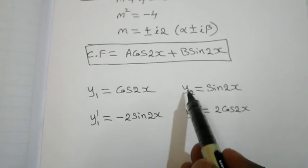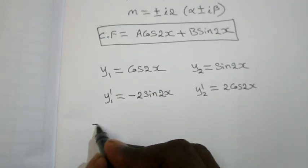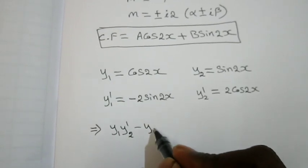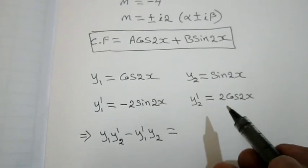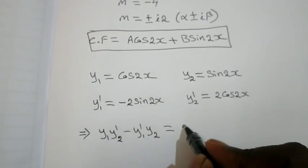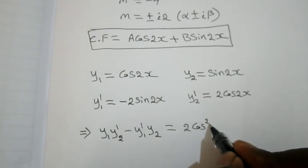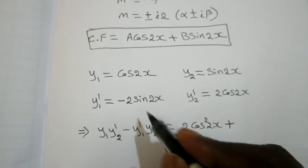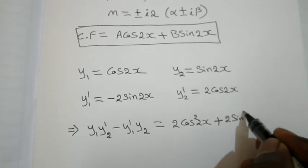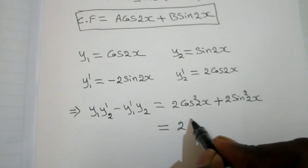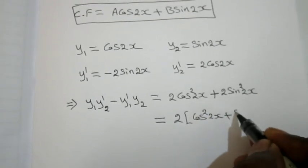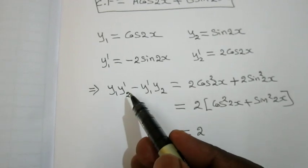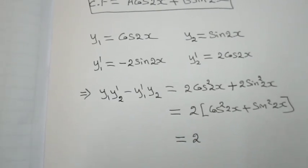Now I compute the Wronskian: W = y1·y2' - y1'·y2. This equals (cos 2x)(2 cos 2x) - (-2 sin 2x)(sin 2x) = 2 cos²2x + 2 sin²2x. Taking 2 outside, we get 2(cos²2x + sin²2x) = 2. So the Wronskian equals 2.